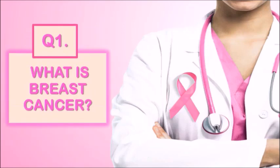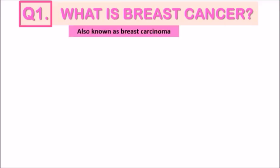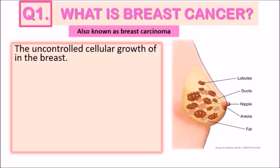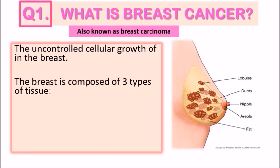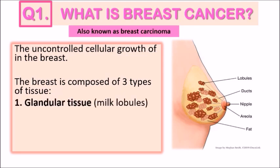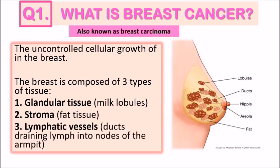The first question is: what exactly is breast cancer? It is medically known as breast carcinoma, which means there is uncontrolled cellular growth in the breast tissue. To understand how breast cancer develops, it is important to first understand the tissues that make up the breasts. The breast is composed of three types of tissue: the glandular tissue, which consists of the milk-producing lobules — commonly known as the mammary glands — the stroma made of fatty adipose tissue, and the lymphatic vessels where ducts drain lymph into the nodes of the armpits.